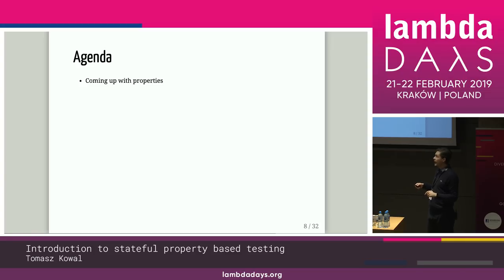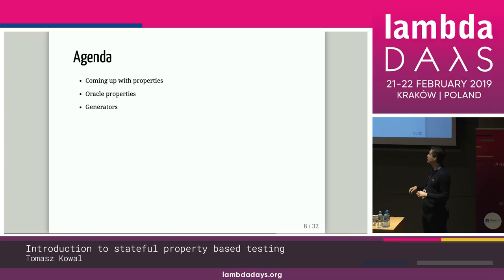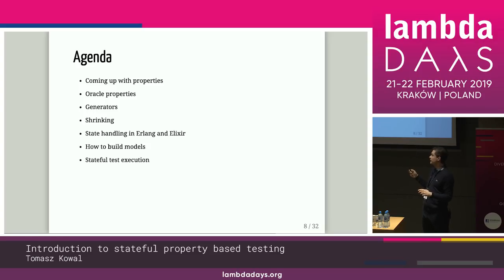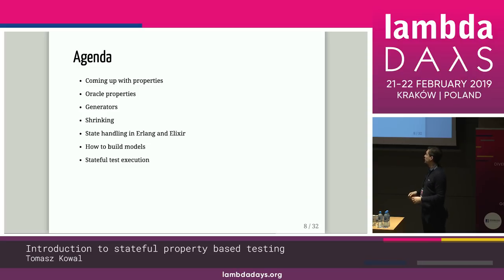I will start with how do you come up with good properties, then speak about Oracle properties, generators, shrinking, state handling in Erlang and Elixir, and how to build models. At some point all those things will seem unconnected, but in the end there will be an example of stateful test execution that gathers everything together.